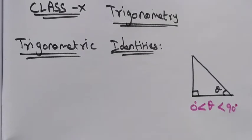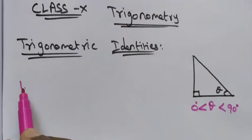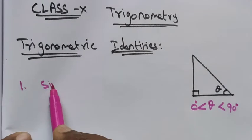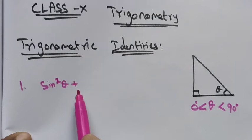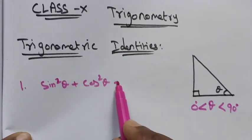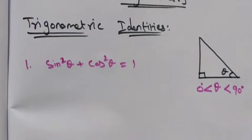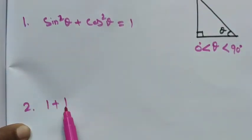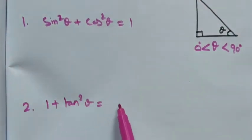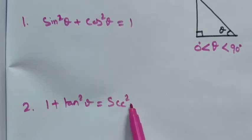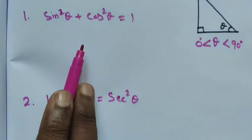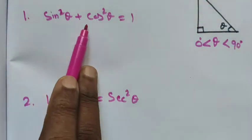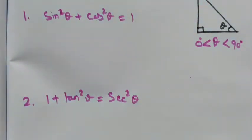Only between 0 degree and less than 90 degree are the three identities satisfied. The first one is sin square theta plus cos square theta is equal to 1. The second one is 1 plus tan square theta is equal to secant square theta — applicable only for square values.